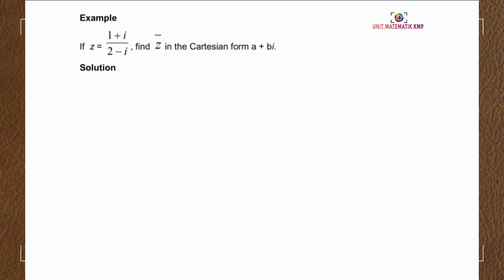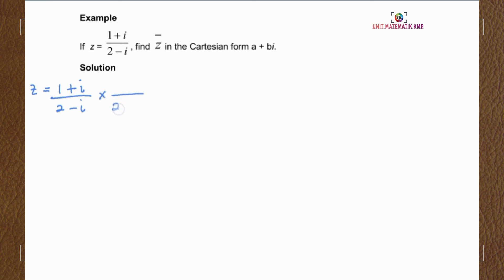Next, find z-bar, which is the conjugate of z, given z in Cartesian form a plus bi. z is given as 1 plus i over 2 minus i. To find the conjugate of z, we first need to simplify this expression by multiplying by the conjugate of the denominator, which is 2 plus i, for both numerator and denominator.